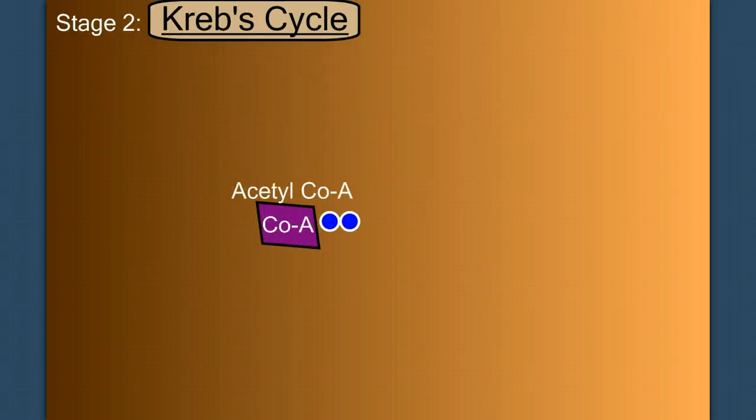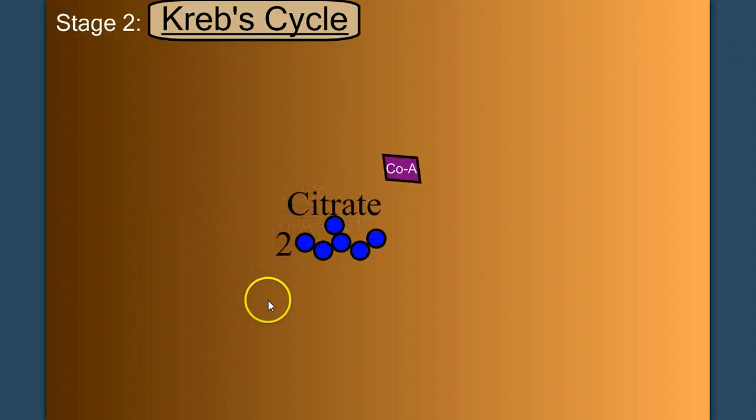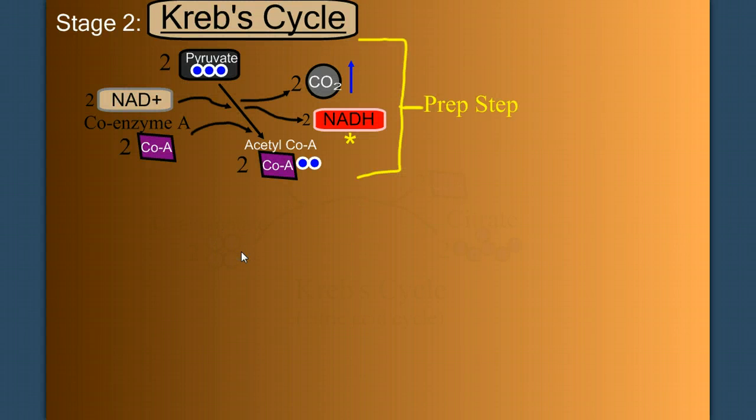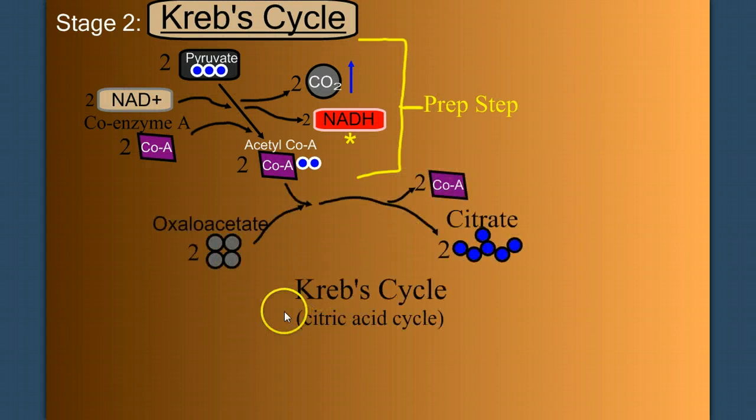As acetyl-CoA enters the Krebs cycle, it reacts with oxaloacetate to make citrate. Thus, the citric acid cycle, another name for the Krebs cycle. So we can draw that like this. Oxaloacetate picks up acetyl-CoA, the coenzyme A gets kicked out, and we have citrate.